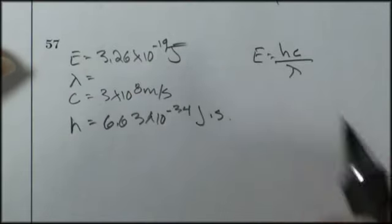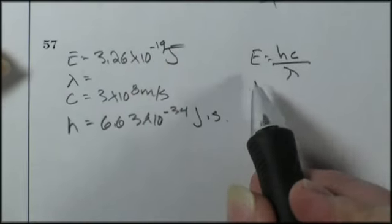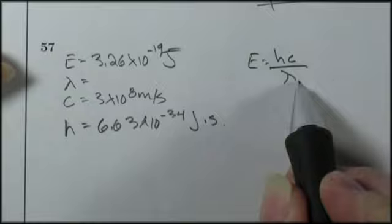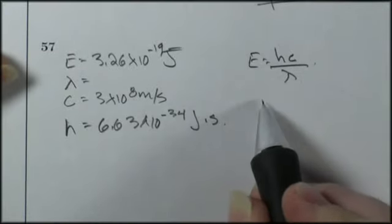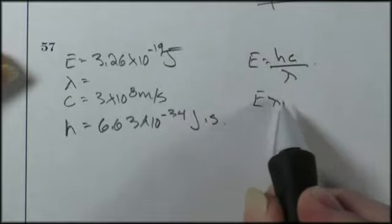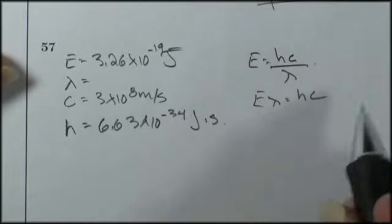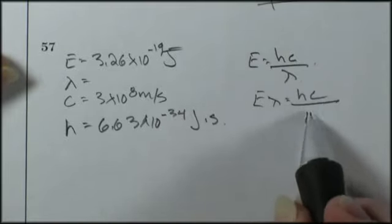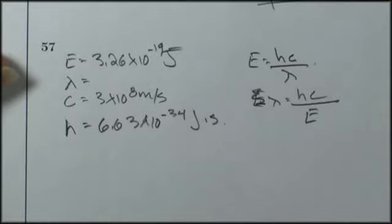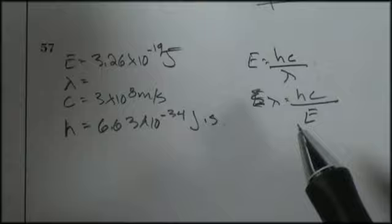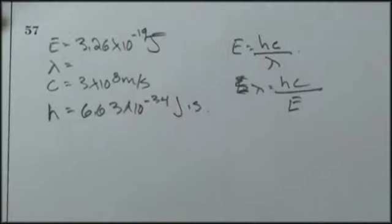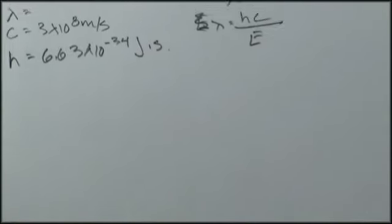So what am I looking for, lambda? So I have to do algebra here. As I said before, I always get rid of the divided by. People make a lot of mistakes there. So I multiply both sides by lambda, I end up with E lambda is equal to HC, and then obviously, HC divided by E will be equal to lambda. Now that may be easy for some of you, but for some of us, the algebra always trips us up. So I'm meticulous.